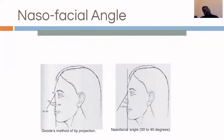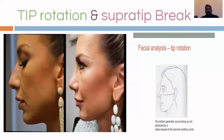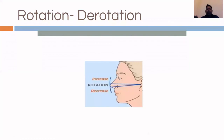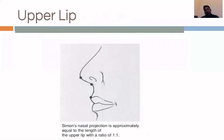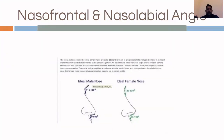The nasofacial angle — the angle between the nose and the face — should ideally be 35 degrees, with a range of 30 to 40 degrees. To summarize the aesthetic parameters: tip rotation, tip projection, upper lip to tip projection ratio, and nasofacial angle. During rhinoplasty we try to make these parameters ideal to achieve a better nose.